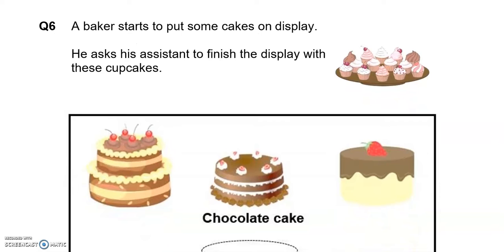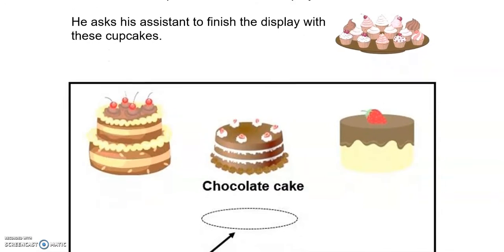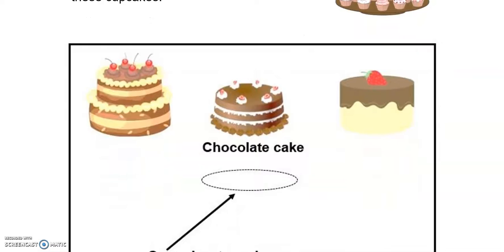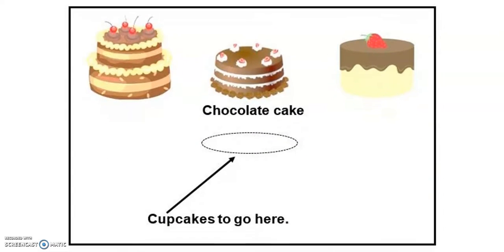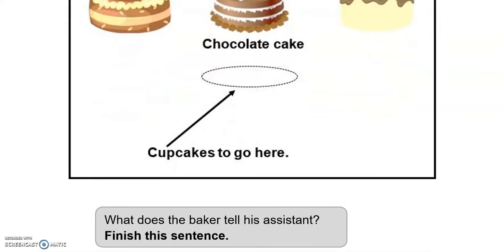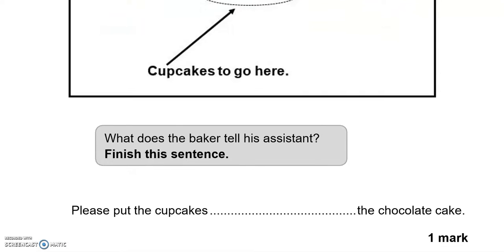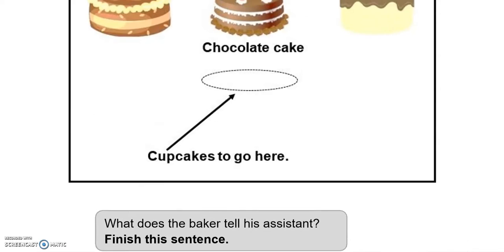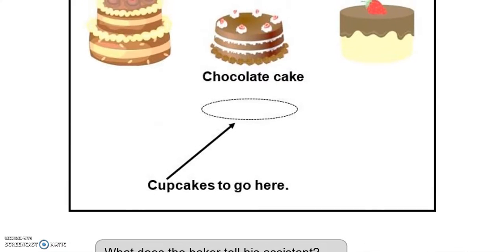A baker starts to put some cakes on display. He asks his assistant to finish the display with these cupcakes. What does the baker tell his assistant? Finish this sentence: Please put the cupcakes below the chocolate cake.